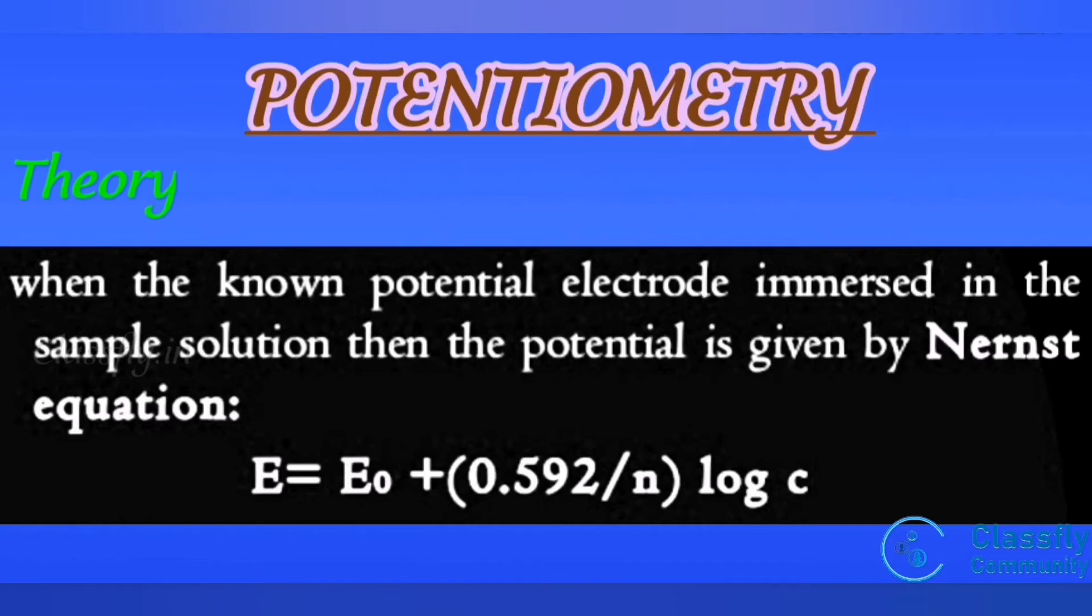That is E = E0 + 0.0592/n log c, where E is the potential of the solution, E0 is standard electrode potential, n is the valency of ion, c is the concentration of sample solution. 0.0592 is the value obtained from RT/F, where R is gas constant, T is temperature in Kelvin, and F is Faraday constant.